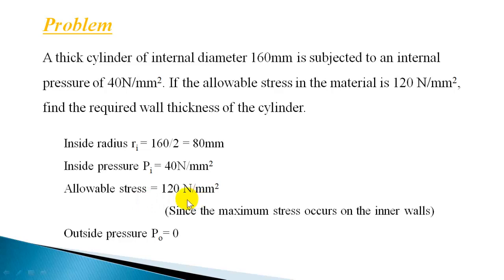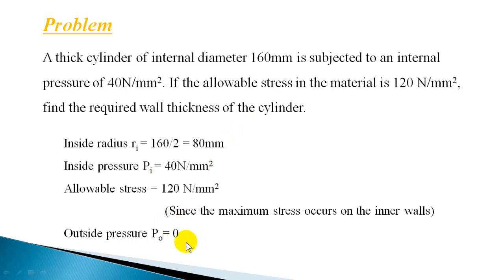This maximum allowable stress is the maximum hoop stress on the inner walls. External pressure can be taken as zero. Without that assumption we cannot solve, because even though we know one pressure and one stress value, the outside radius is unknown since we are asked to find the wall thickness. So there is another unknown — the outside radius — and to resolve this we assume external pressure as zero.